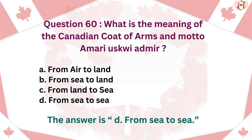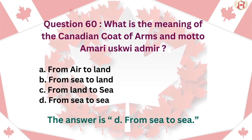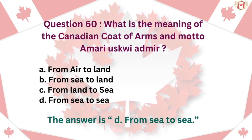Question 60: What is the meaning of the Canadian Coat of Arms motto 'A Mari Usque Ad Mare'? A. From air to land, B. From sea to land, C. From land to sea, D. From sea to sea. The answer is D. From sea to sea.